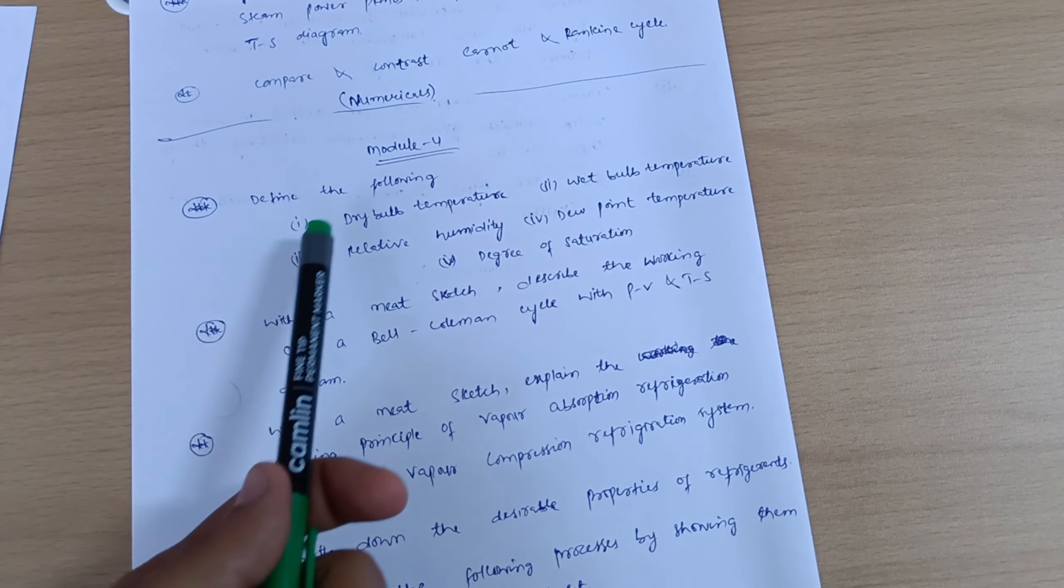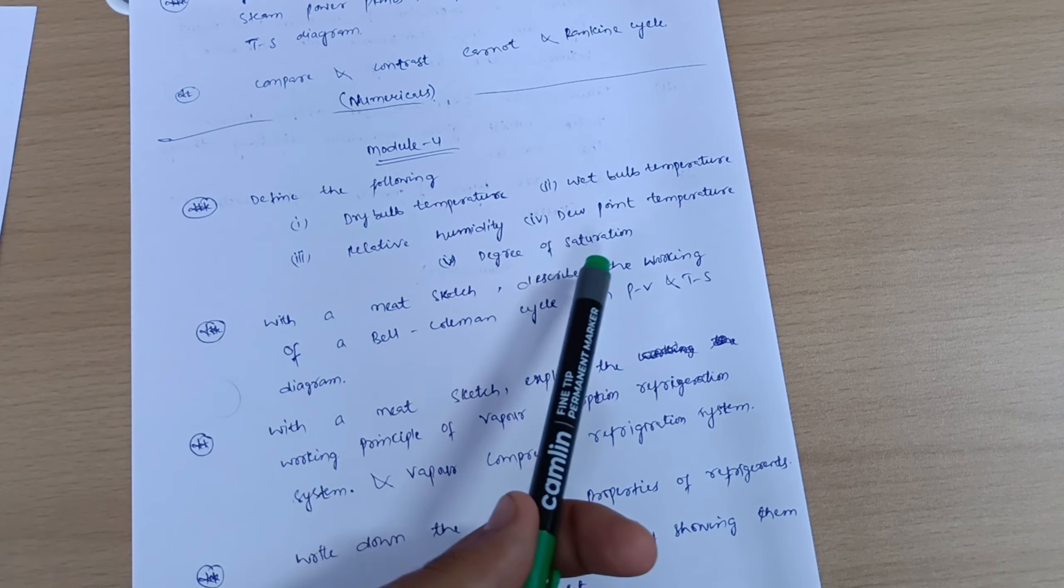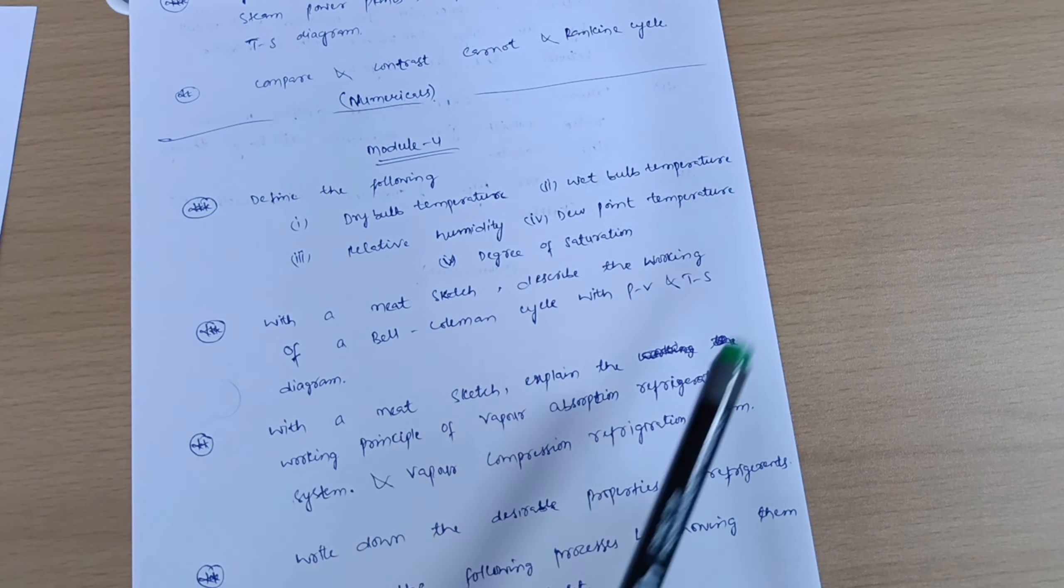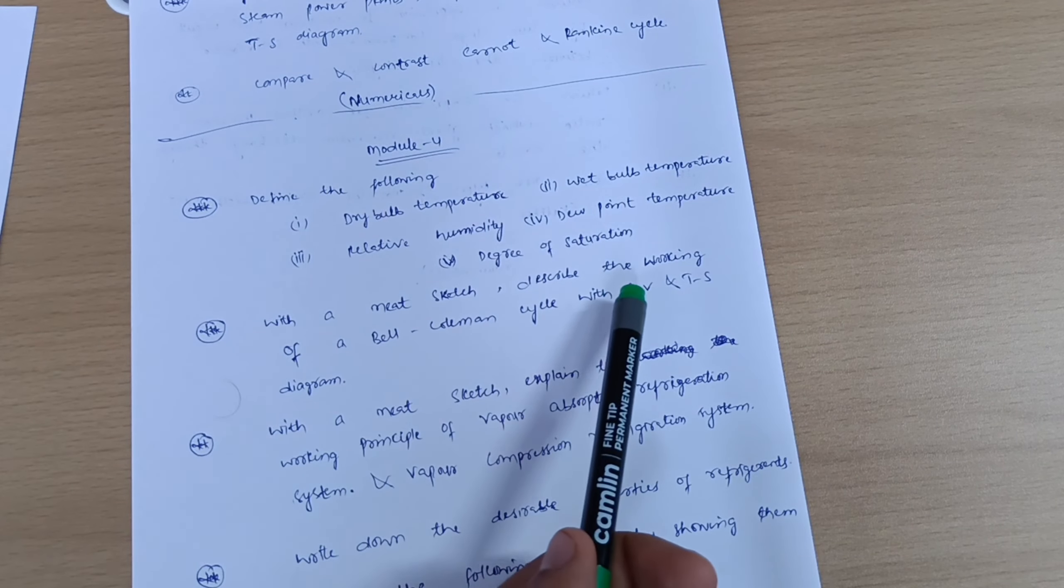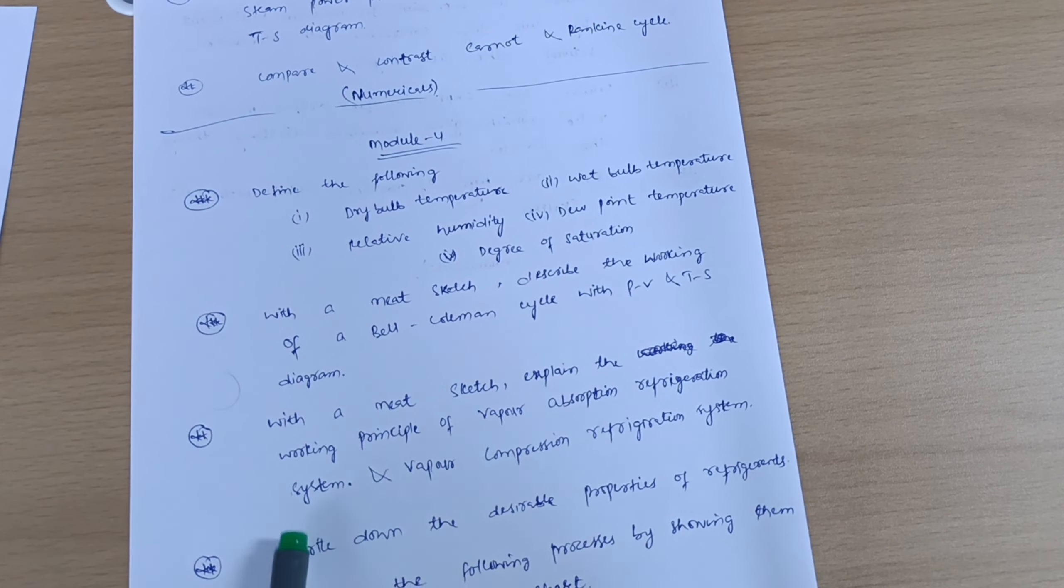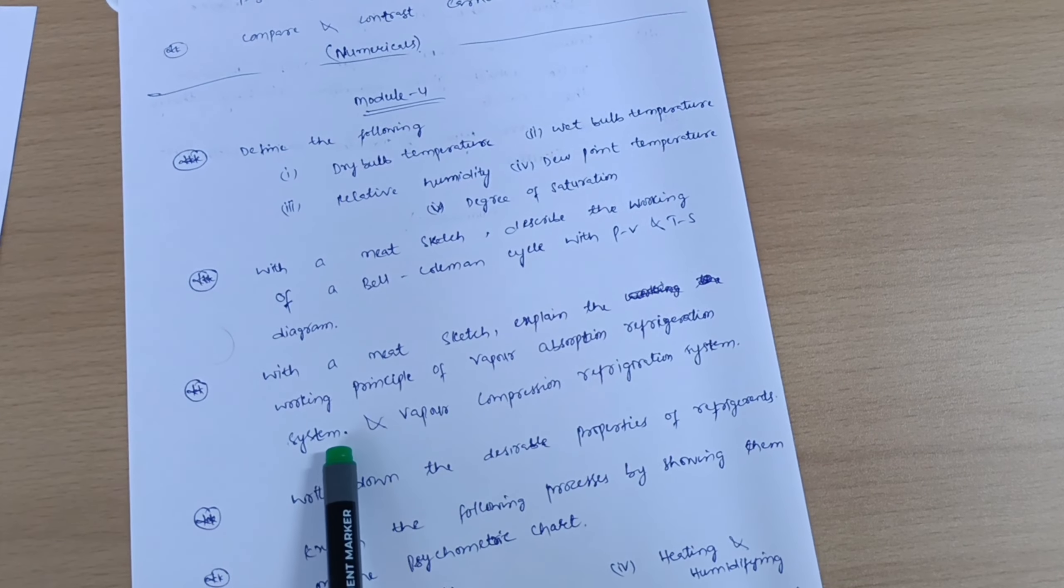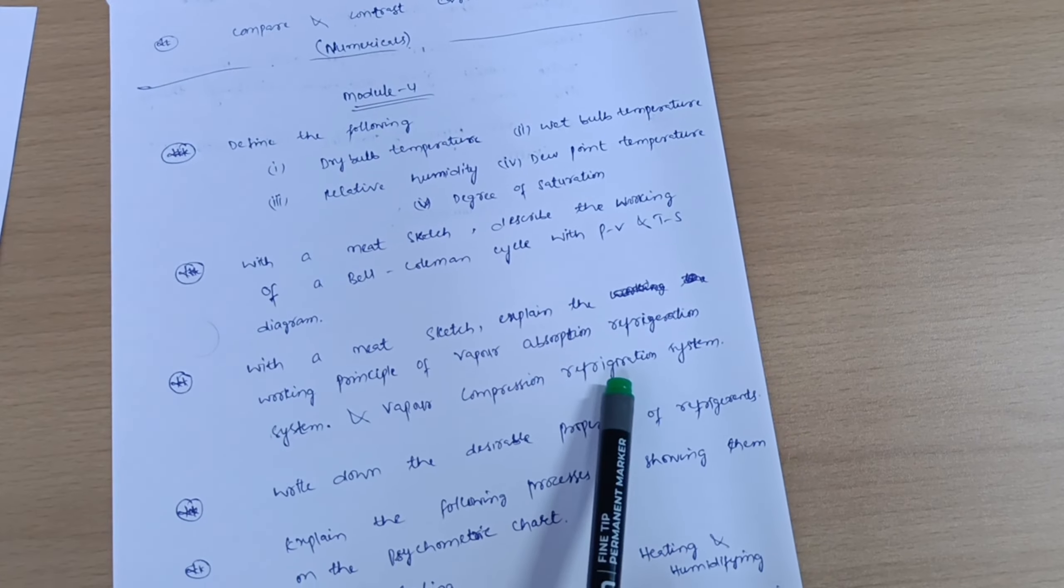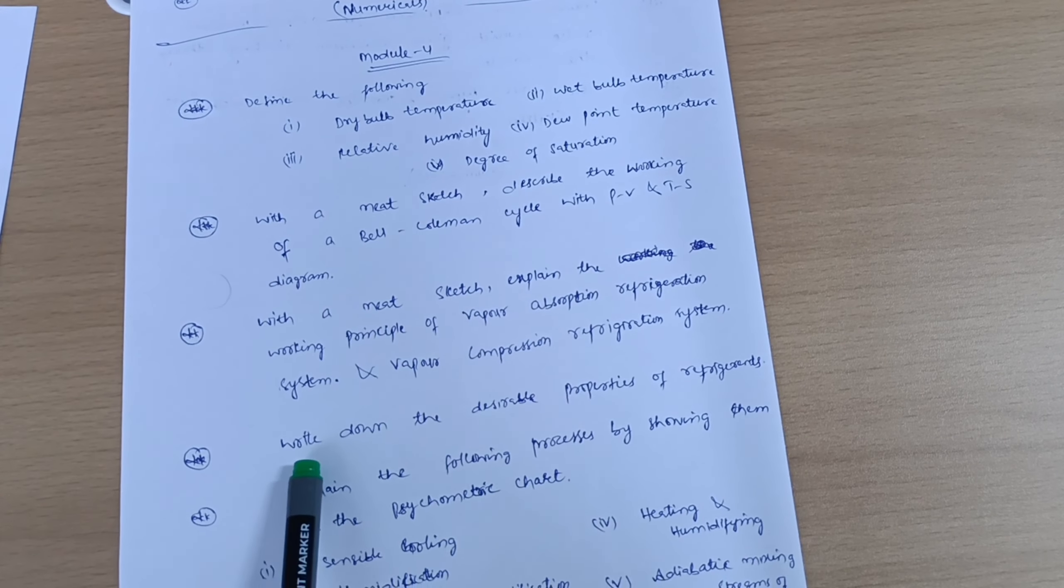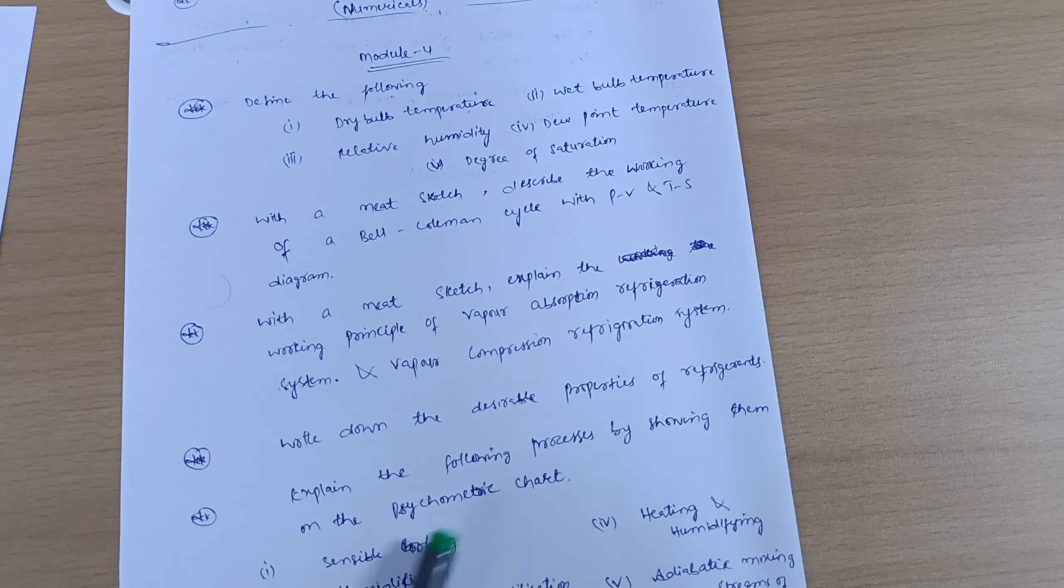Next is Module 4. Define the following: dry bulb temperature, wet bulb temperature, relative humidity, dew point temperature, and degree of saturation. With a neat sketch, describe the working of a Bell-Coleman cycle with PV and TS diagram. With a neat sketch, explain the working principle of a vapor absorption refrigeration system, or sometimes they may ask you vapor compression refrigeration system.